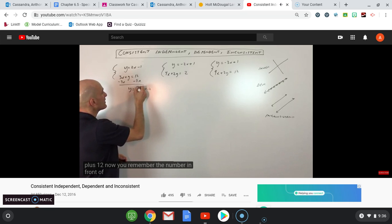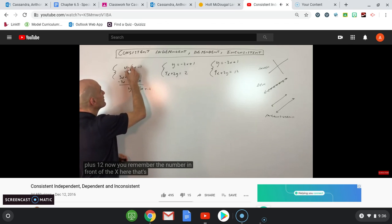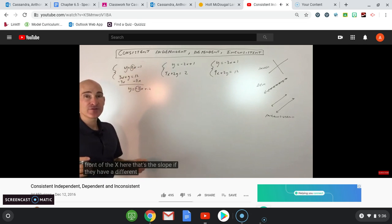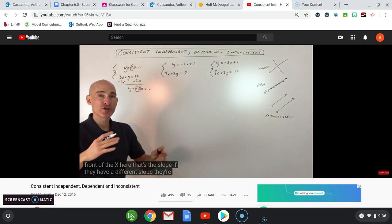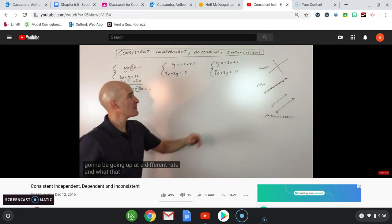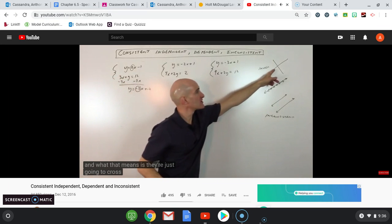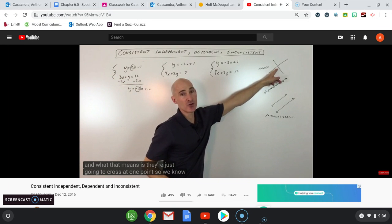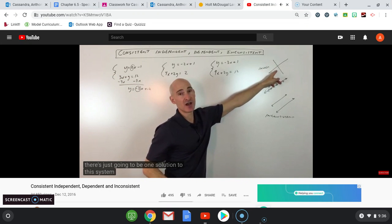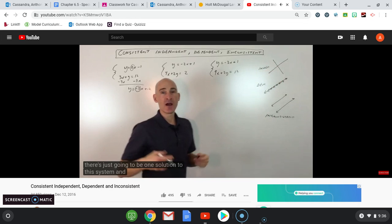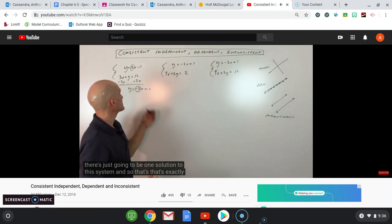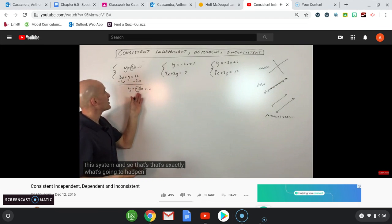The number in front of the x is the slope. If they have a different slope, they're going to be going up at a different rate, and they're just going to cross at one point. So we know there's just going to be one solution to this system.